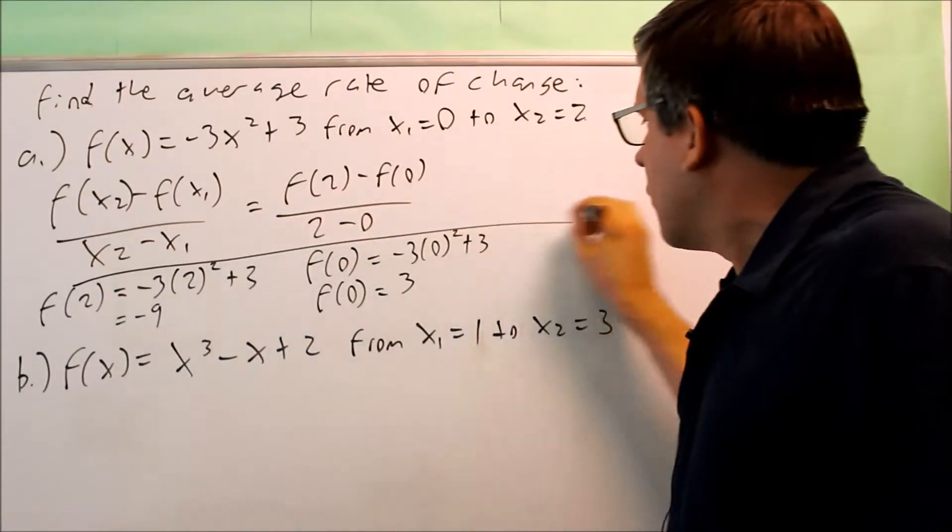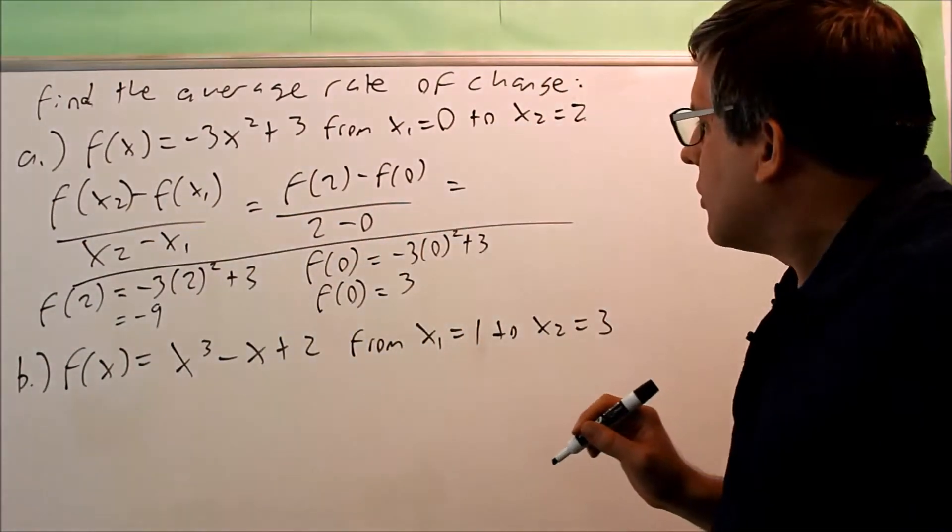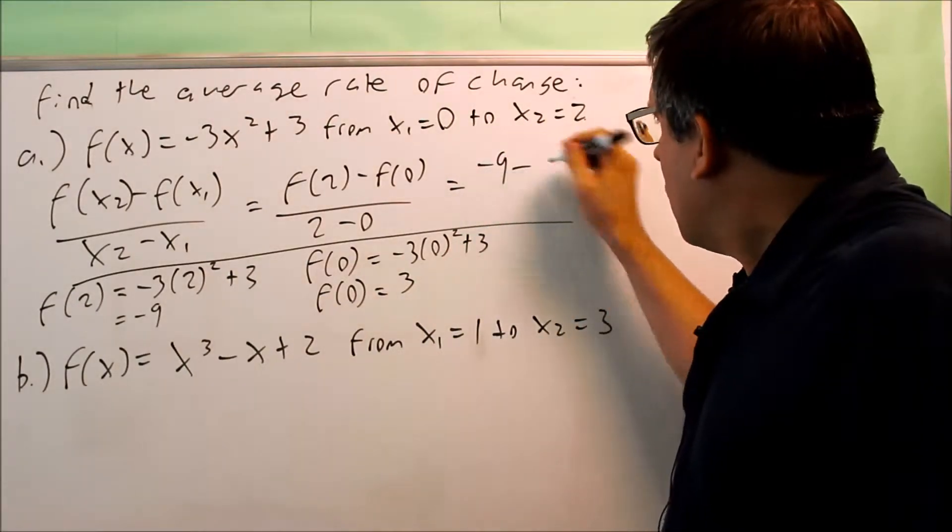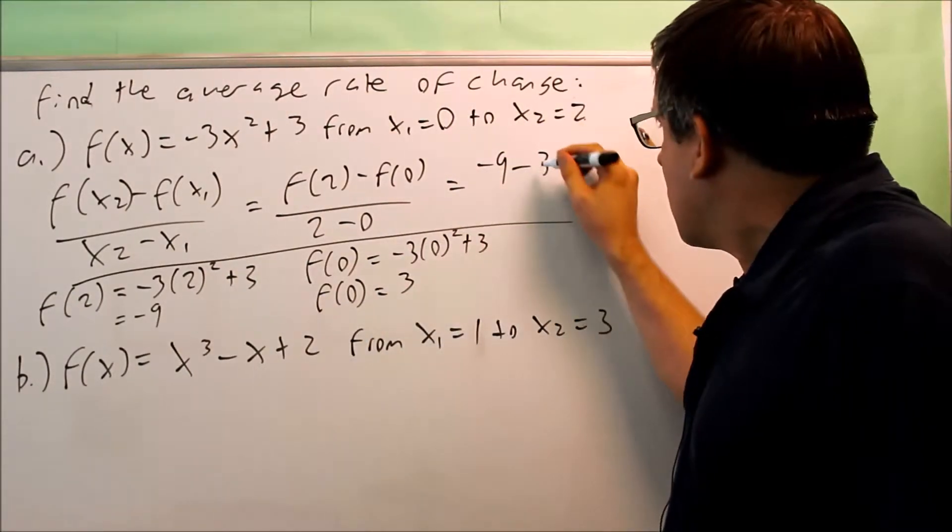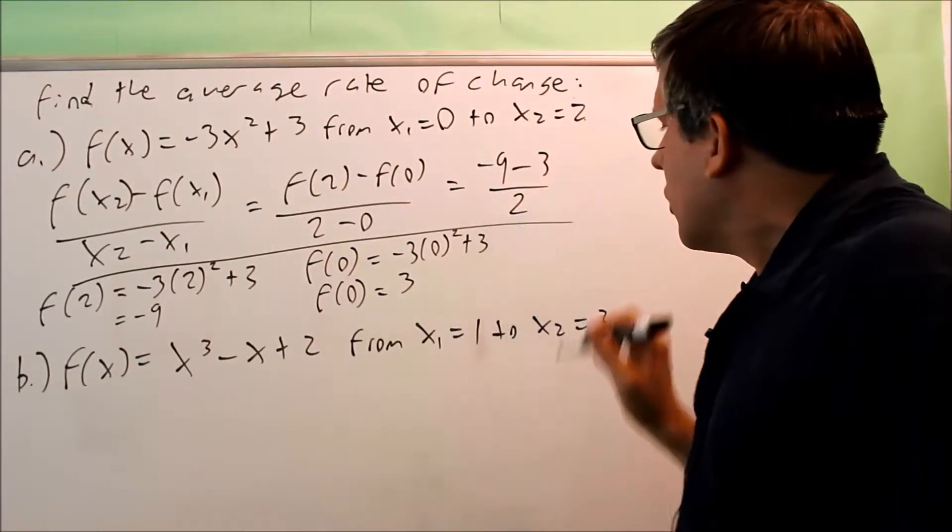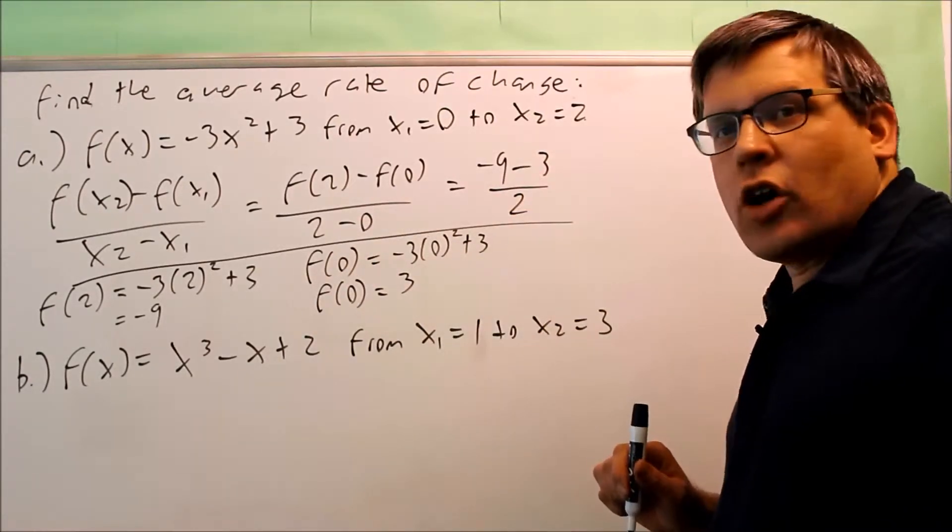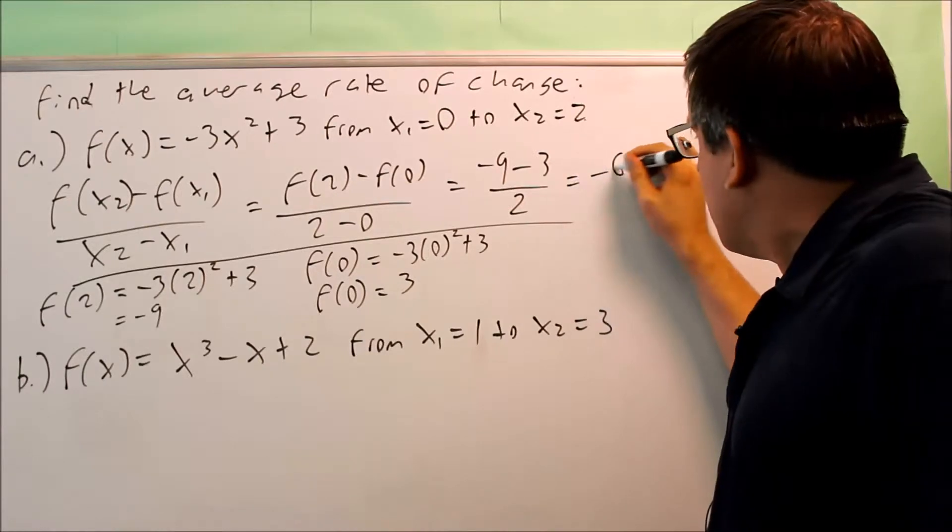Right here is the formula itself. So when we do that, we have f of 2. We did that already. That's negative 9. We're going to subtract f of 0, which is 3. And that's going to be over 2 minus 0, which is 2. That gives you negative 12 divided by 2 gives you negative 6.